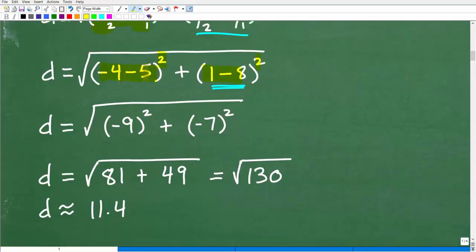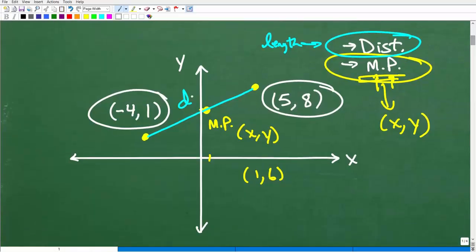So negative 4 minus 5 is negative 9. We're going to square that. And then 1 minus 8 is negative 7. And we're going to square that. So negative 9 squared is negative 9 times negative 9. That's a positive 81. Negative 7 squared is negative 7 times negative 7. Of course, that's a positive 49. So 81 plus 49 is 130. Then finally, after you have all this internal stuff done, we're going to go ahead and take the square root of 130. And that's approximately 11.4. Okay, that's our answer. So our distance is approximately 11.4. Meaning, if we were going to come up here, we would have the distance between this coordinate and this coordinate would be around 11.4 units.